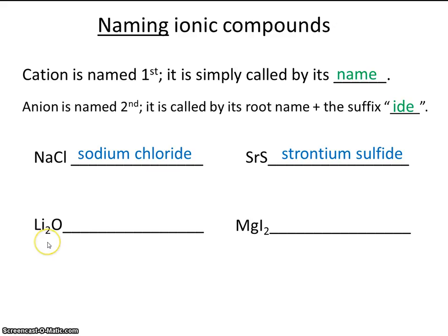In this next example, we have lithium and oxygen. It does not matter how many lithium ions there are. There's two, but that's not relevant here when we provide the name. So the name of this is just lithium oxide. Same thing here. It doesn't matter that we have two iodines. It's simply called magnesium iodide.